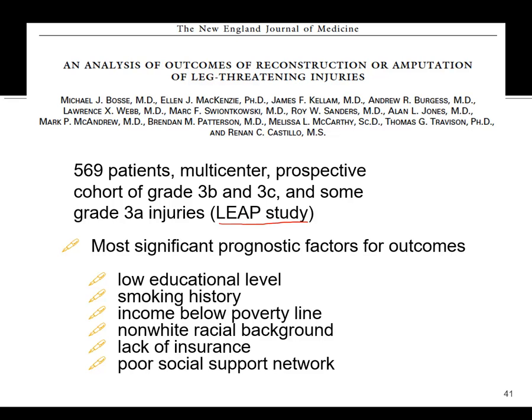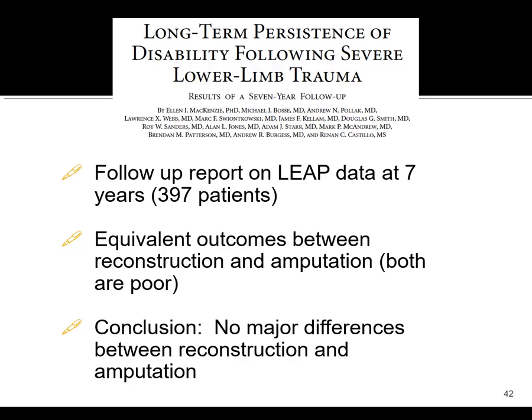There's some stuff that's just out of your control, and that's what actually determines outcomes — kind of sobering. Keep this in mind: low educational level, smoking history, income below the poverty line, non-white racial background, lack of insurance, poor social support network. That's what seems to have the most impact on outcomes — stuff beyond our control, unfortunately. Of course you control what you can, but these factors have a significant impact as well.